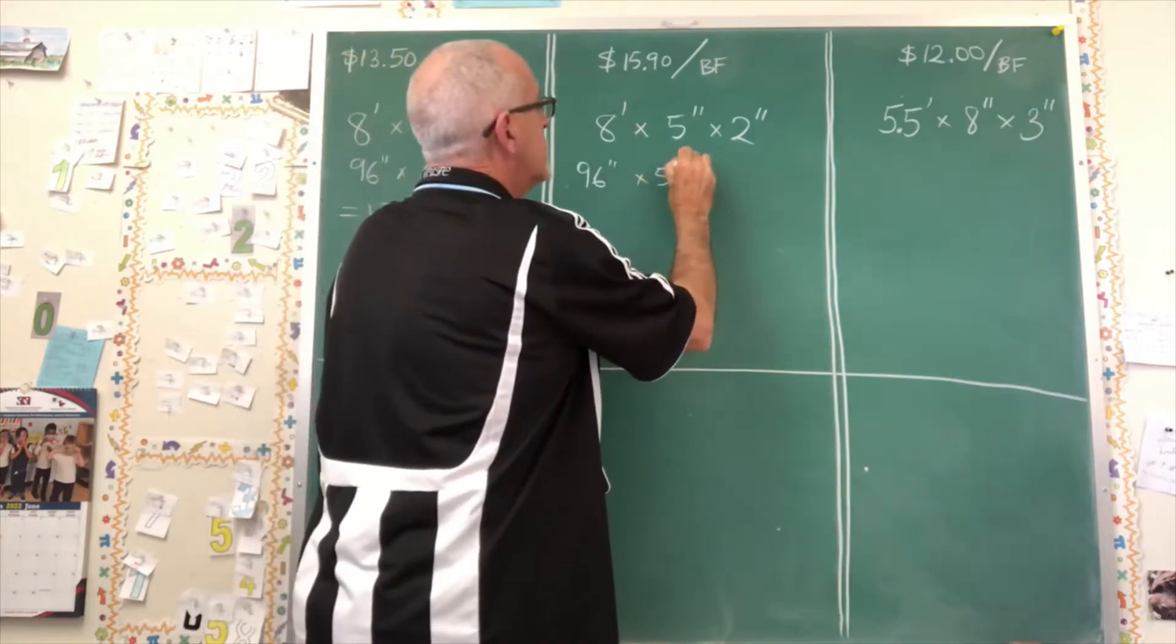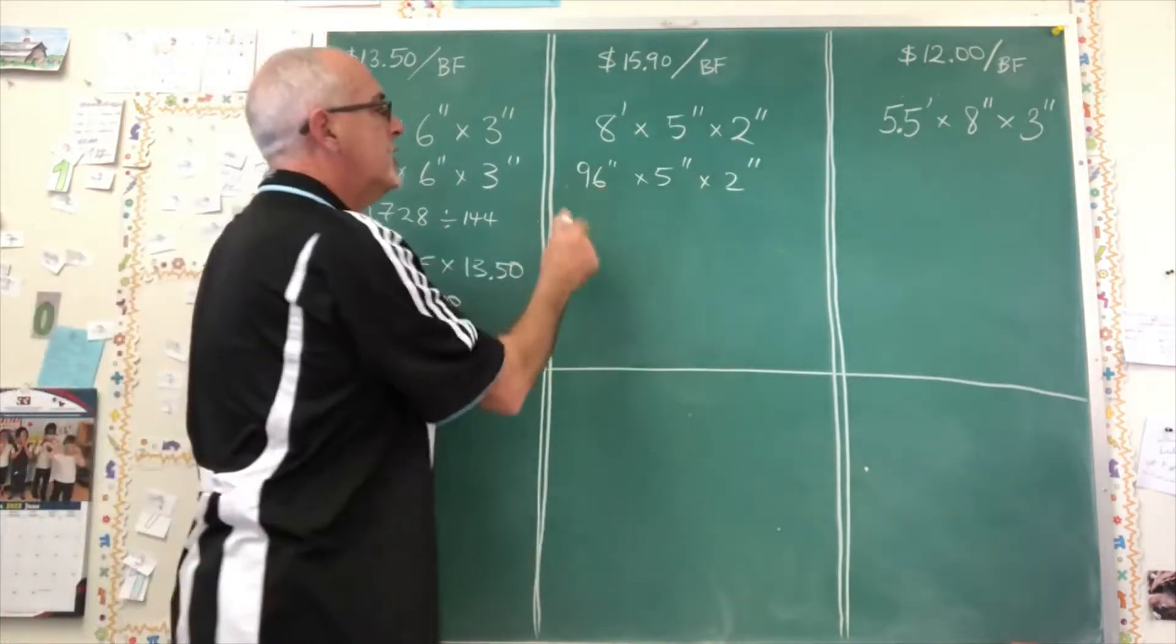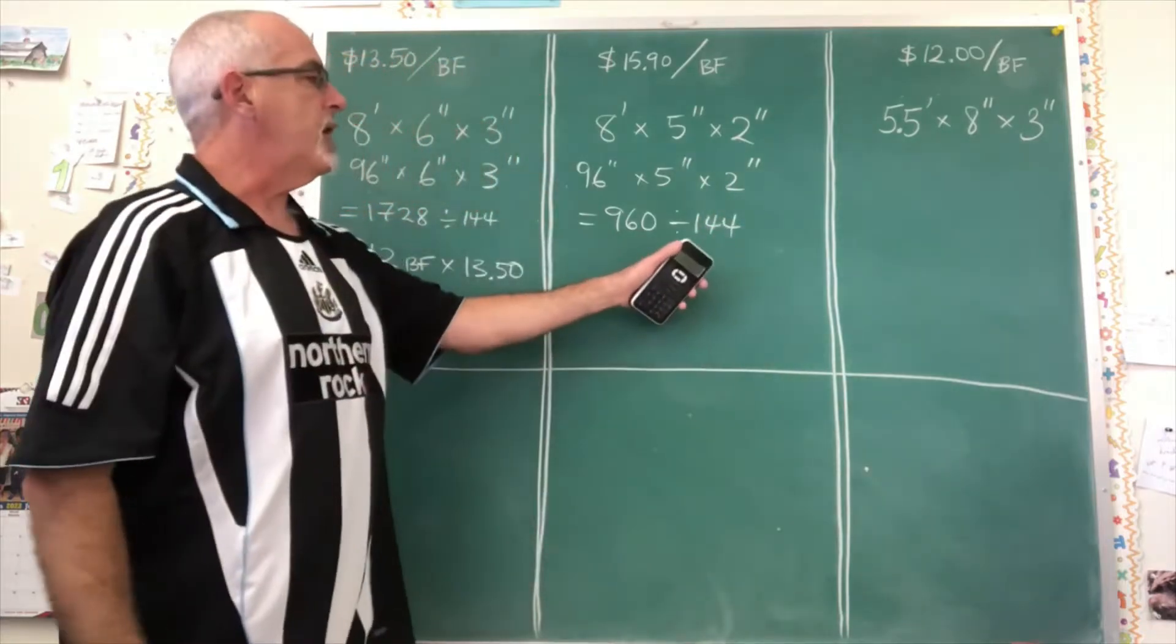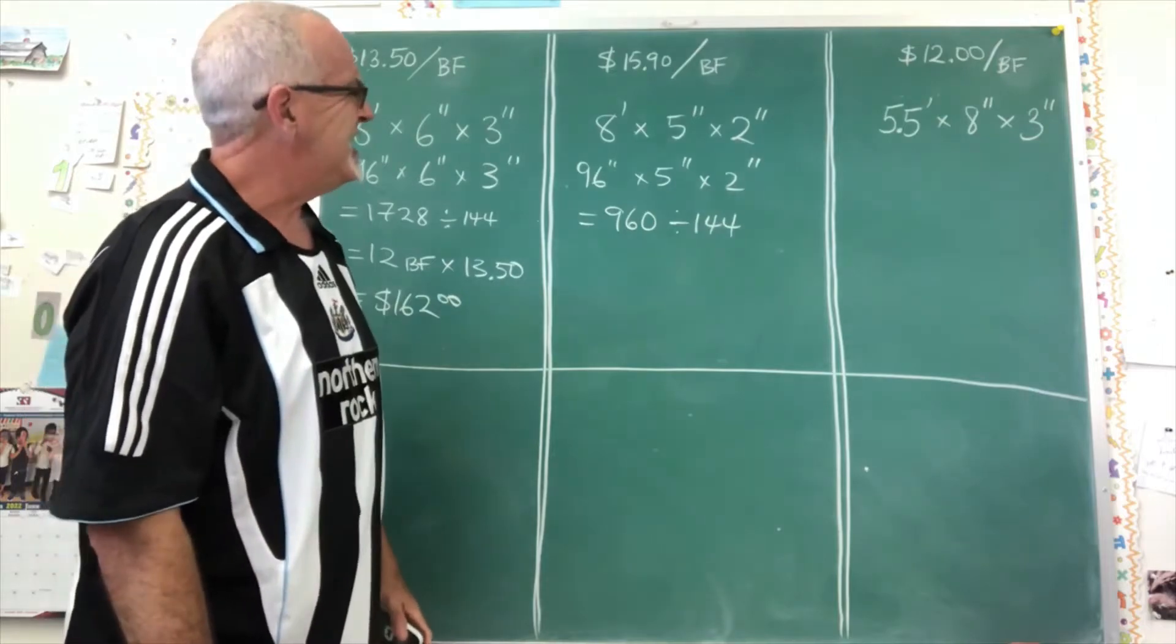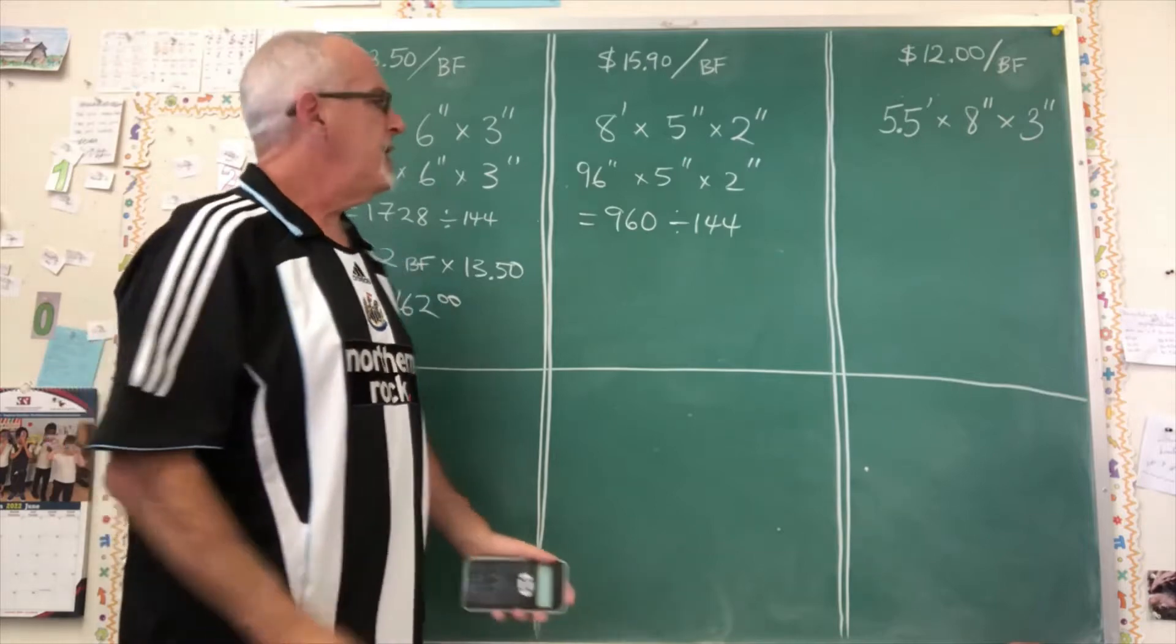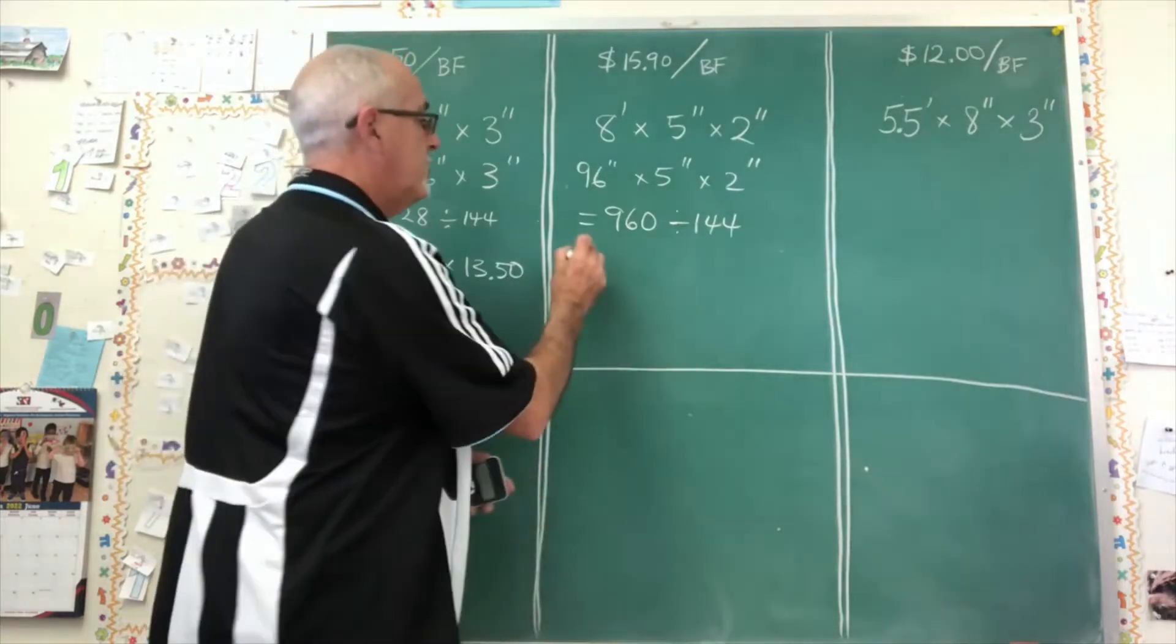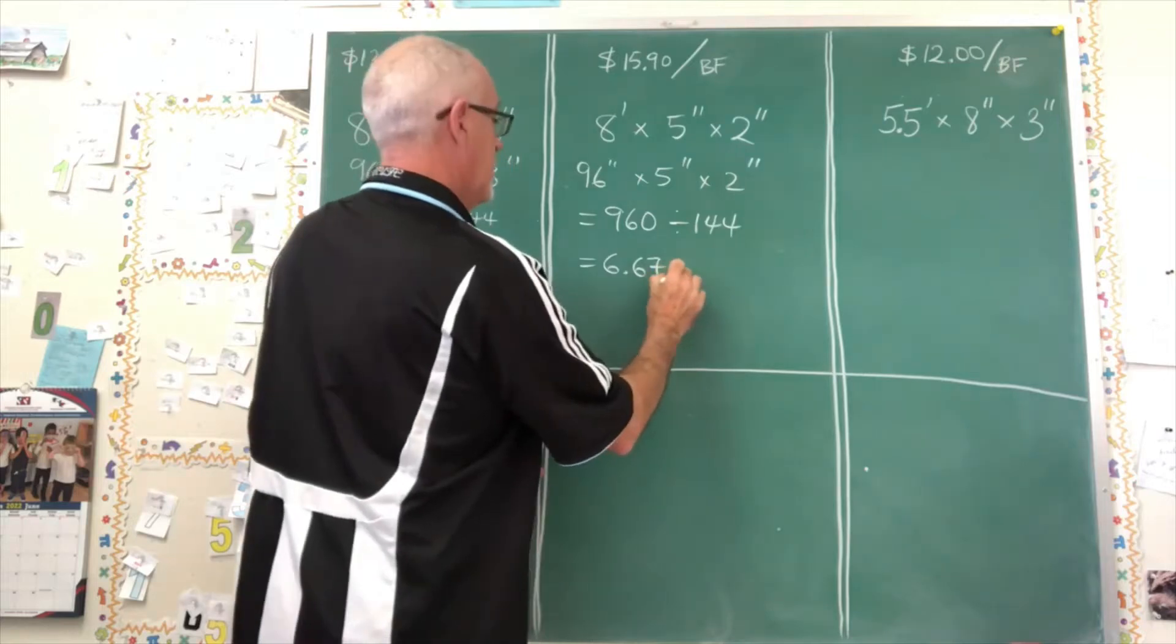And I'm going 96 times 5 times 2. This I can do in my head because 5 times 2 is 10 and 10 times 96 equals 960. I still don't necessarily feel very comfortable dividing that by 144 in my head, but I can guess it's going to be somewhere between 6 and 7. And it's 6.67 with rounding board feet.